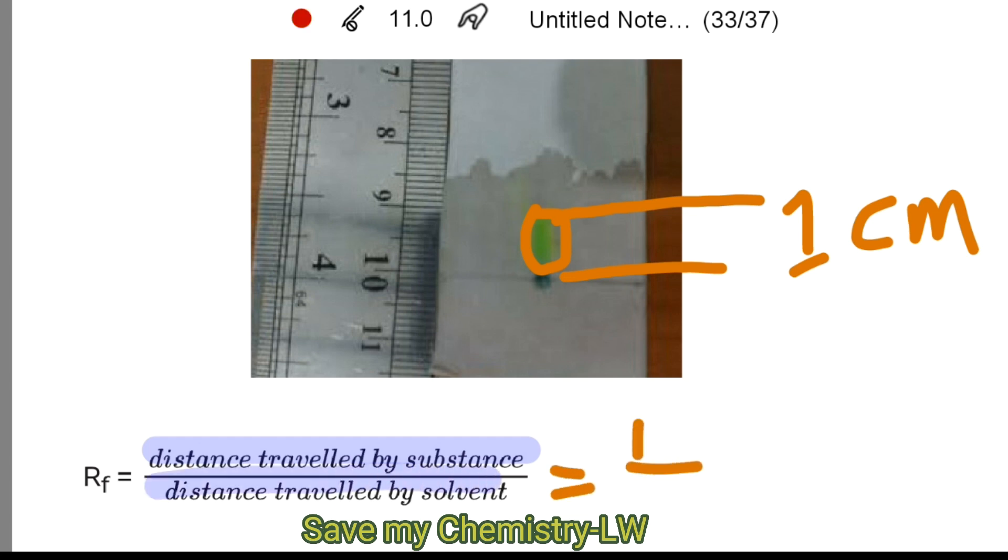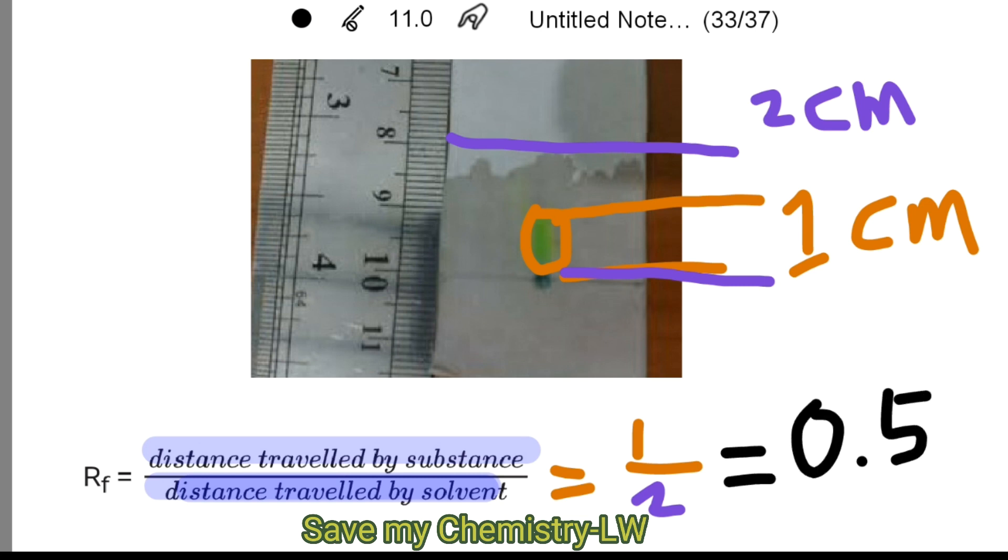And then we measure the distance traveled by solvent. Okay, see the purple color. We start from the bottom, bottom line, and then the top of the solvent ridge. There is 2 centimeters.